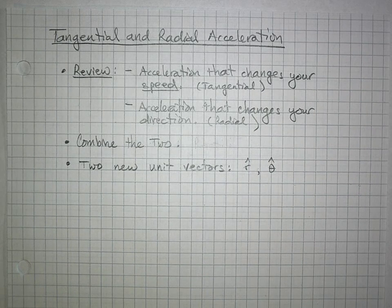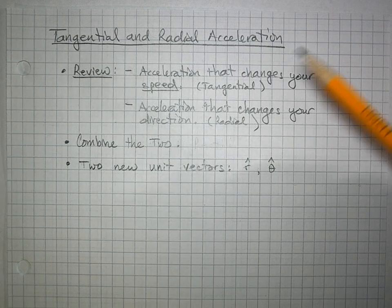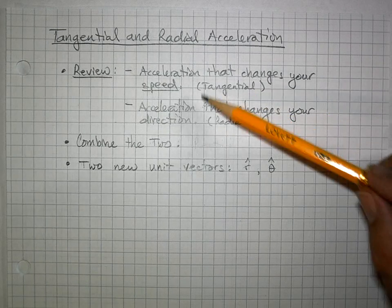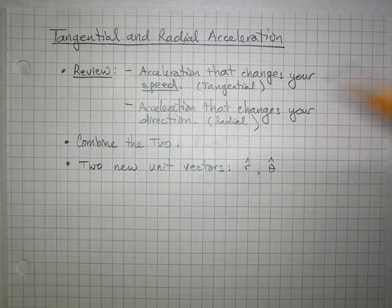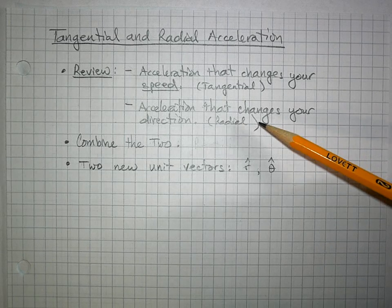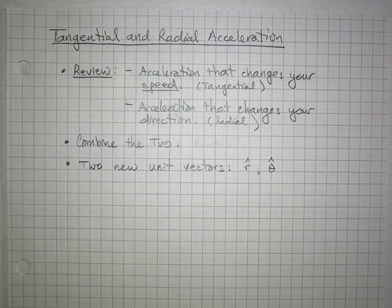Today we'll talk about tangential and radial acceleration. First I'll review what acceleration is in terms of change in speed — that's what we'll call tangential acceleration. Last time we talked about acceleration that can change direction, called centripetal acceleration, which we'll rename radial acceleration. We'll combine these two kinds of acceleration and talk about them happening at the same time to an object as it moves through space.